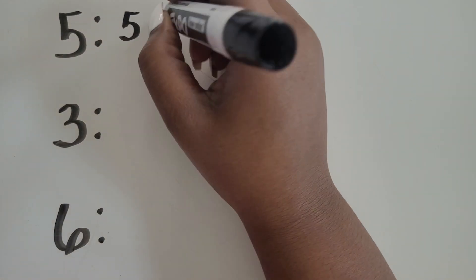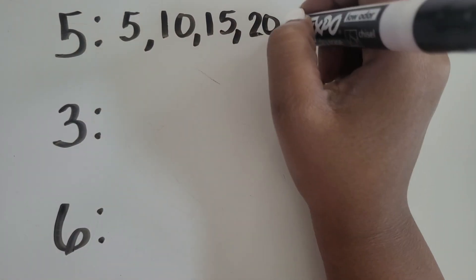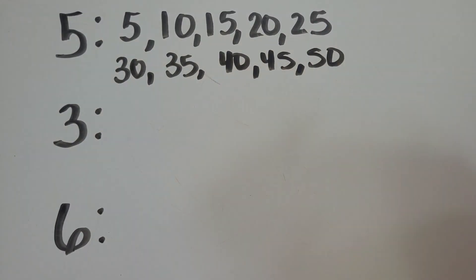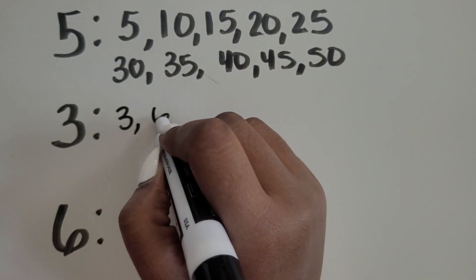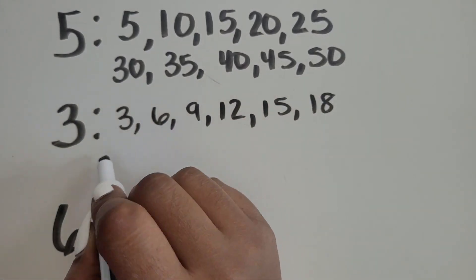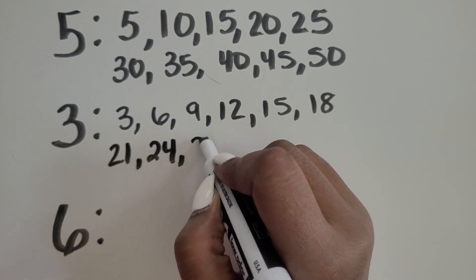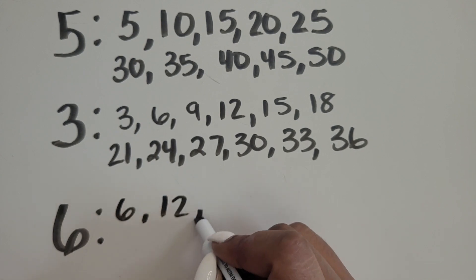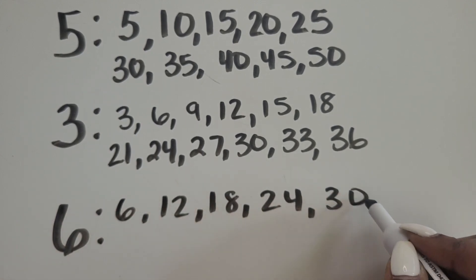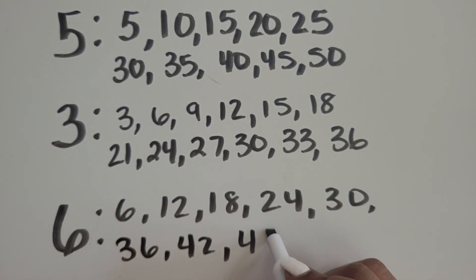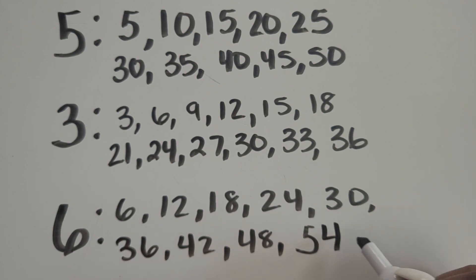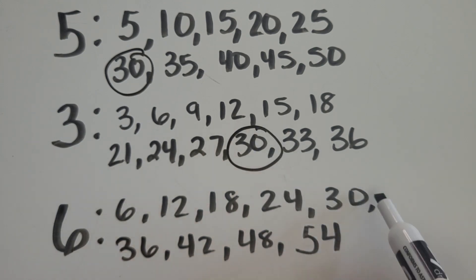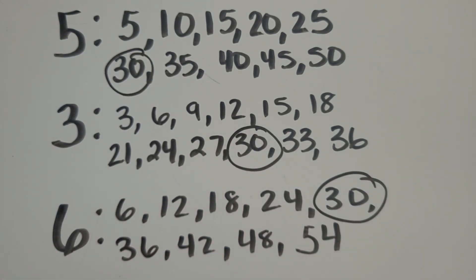Let's list out the multiples of each denominator and see what they have in common. For each number, you can skip count to find the multiples. List out between 5 and 10 multiples of each number to see what they have in common. Notice they all have 30 as a multiple.